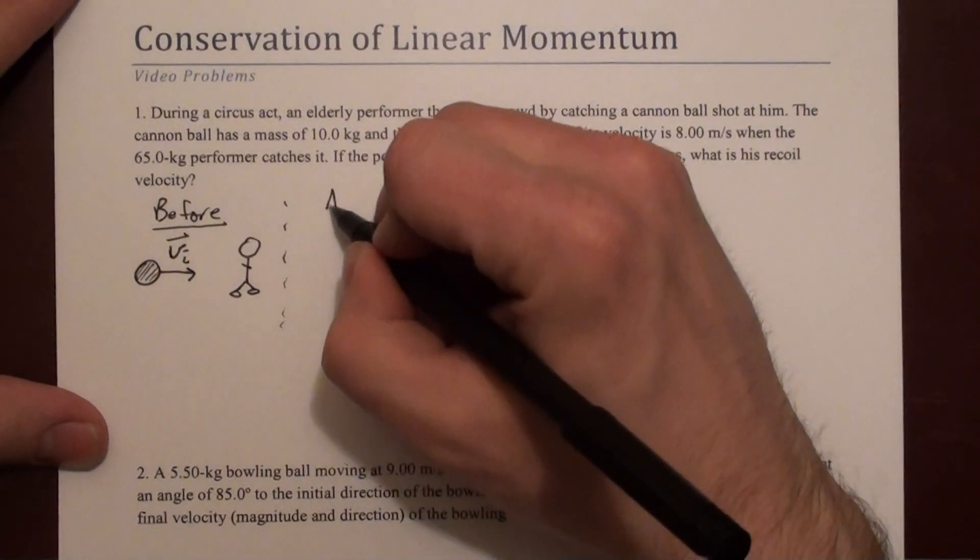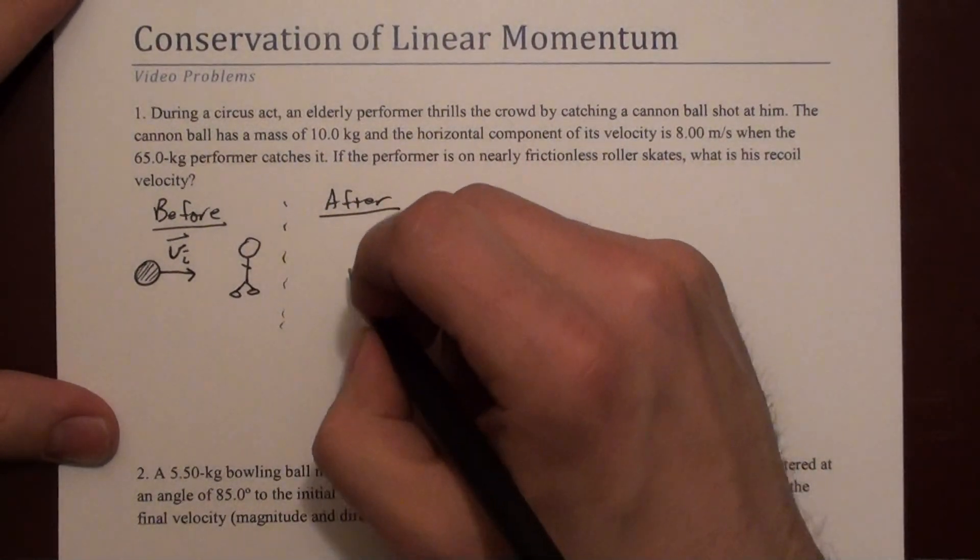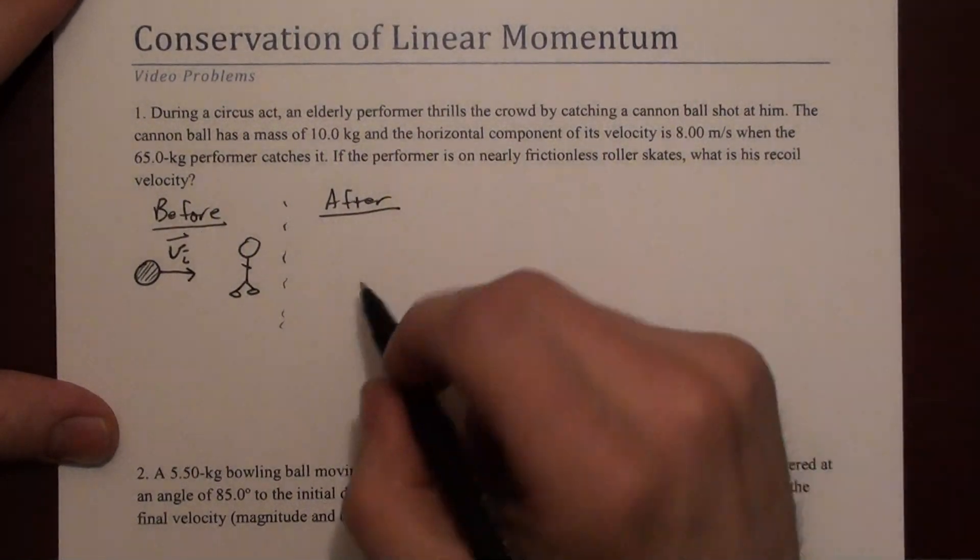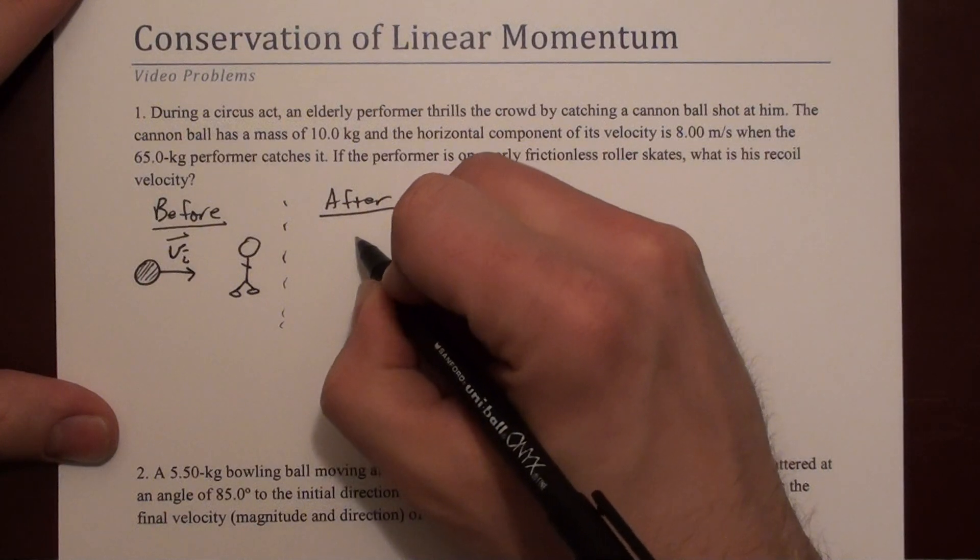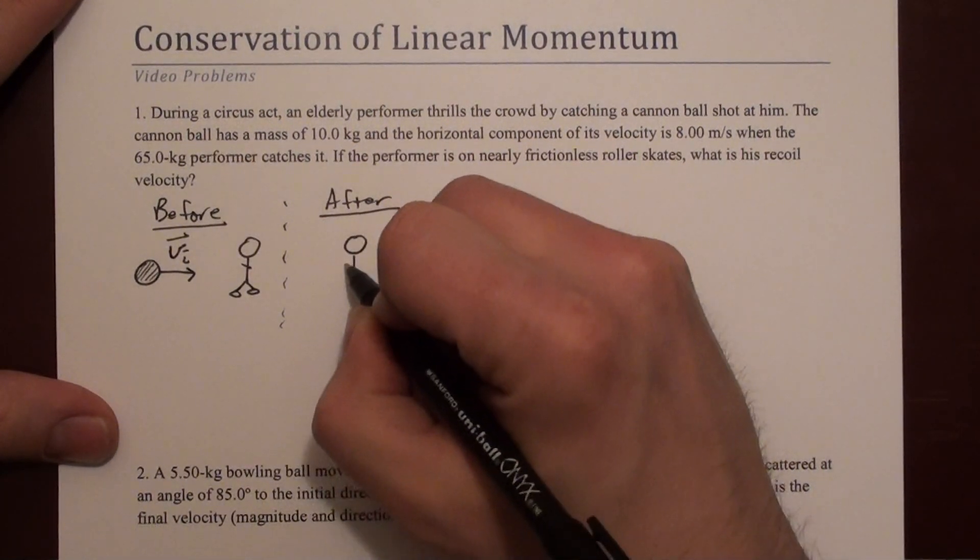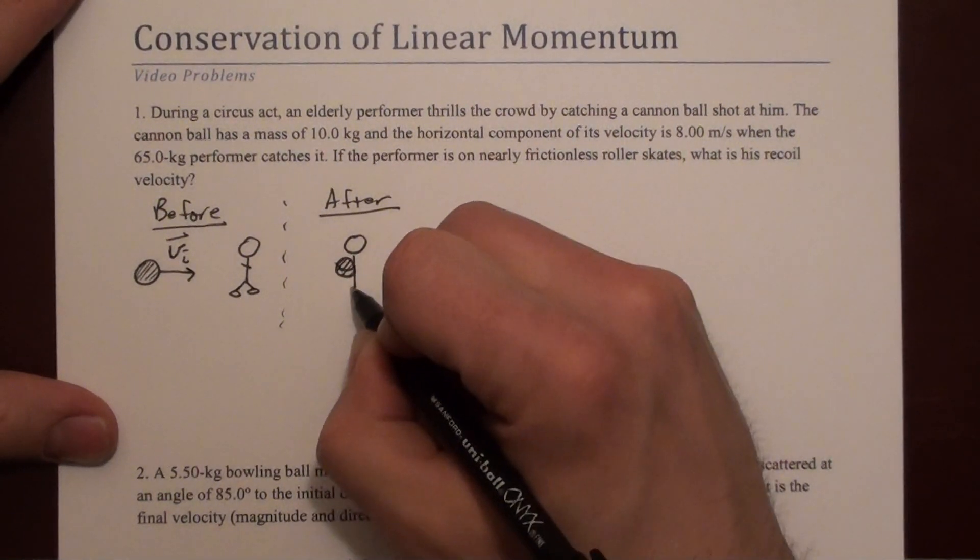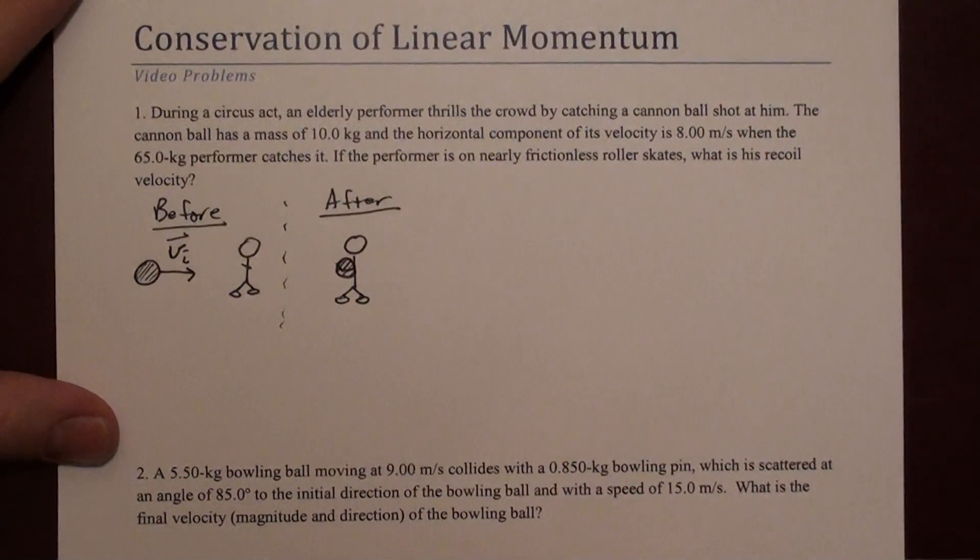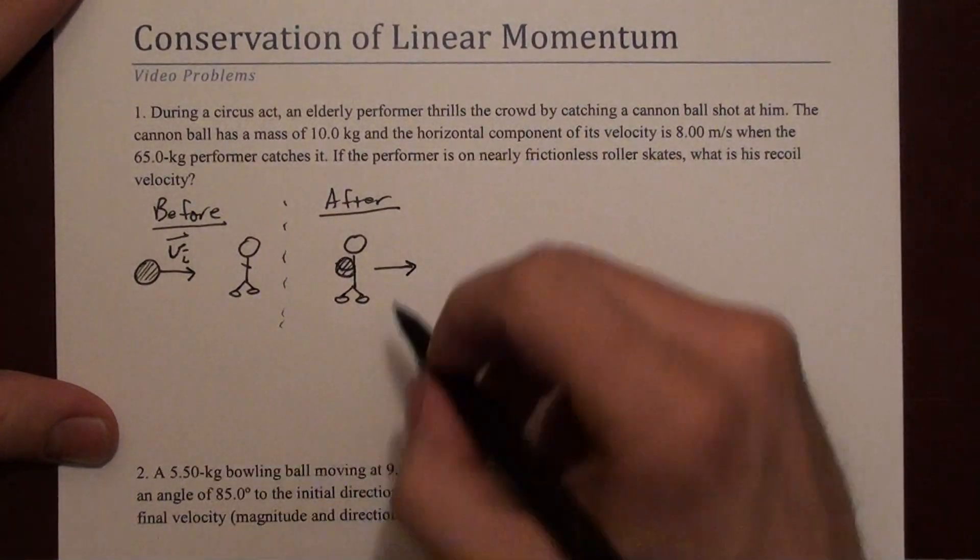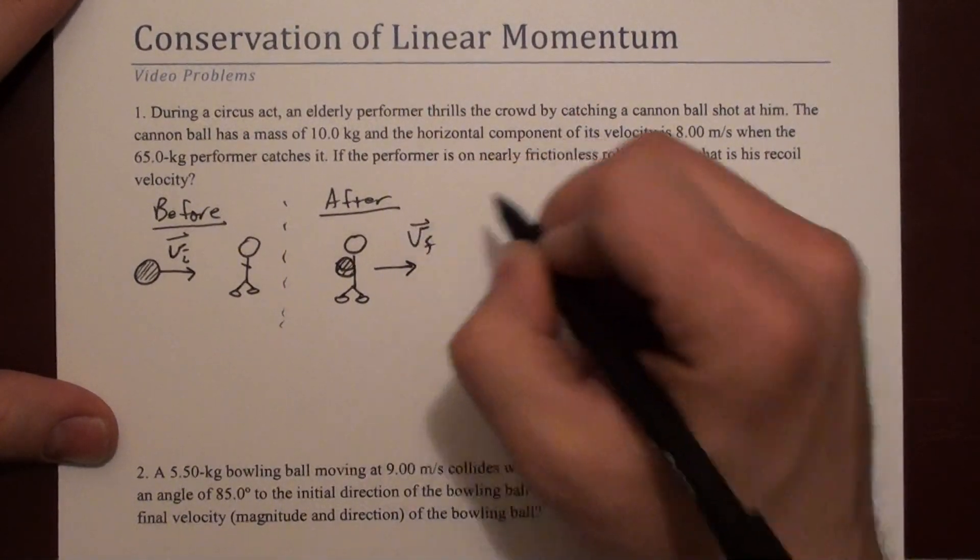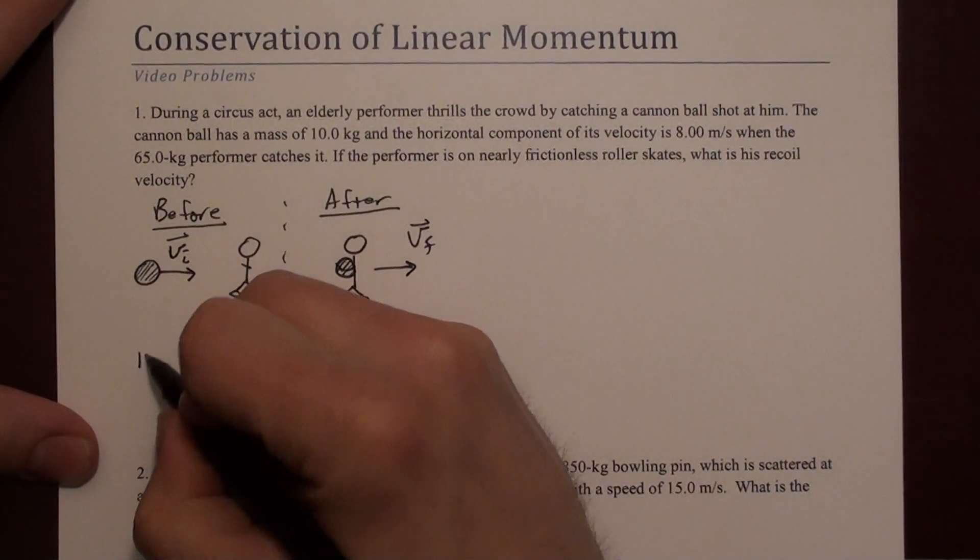Afterward, the performer has caught the cannonball, and the whole system should recoil. We expect the cannonball and performer to both recoil at some speed, we'll call it v final.